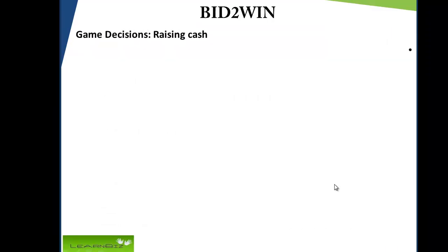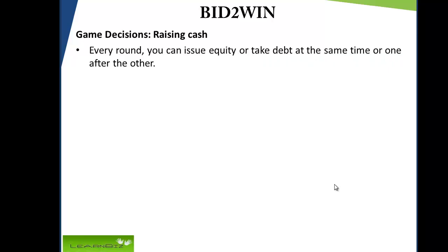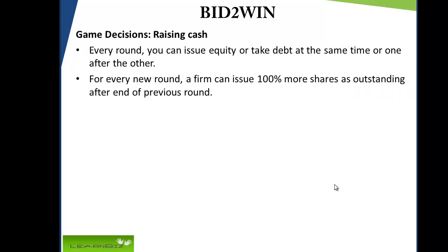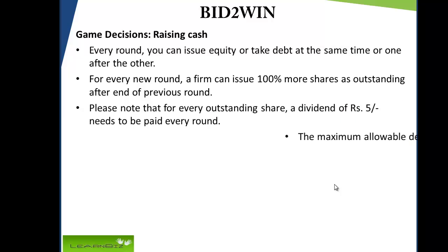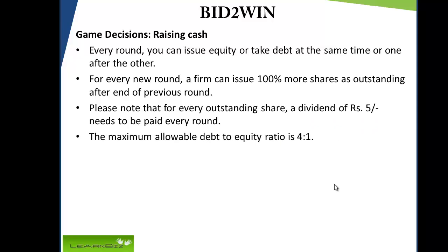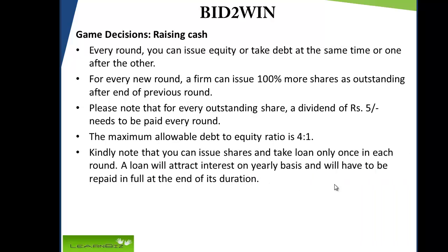Every round you can issue equity or take debt at the same time or one after the other. For every new round, a firm can issue 100% more shares than outstanding after the end of the previous round. Please note that for every outstanding share, a dividend of Rs. 5 needs to be paid every round. The maximum allowable debt to equity ratio is 4 to 1. You can issue shares and take a loan only once in each round. A loan will attract interest on a yearly basis and will have to be repaid in full at the end of its duration.